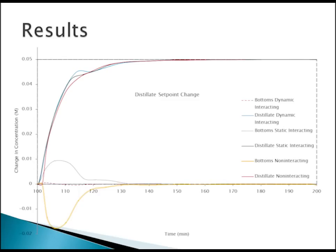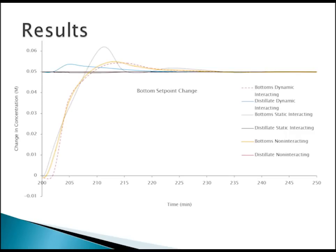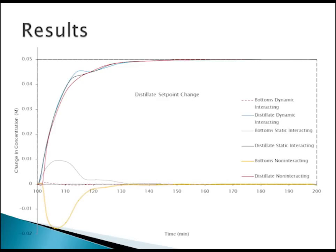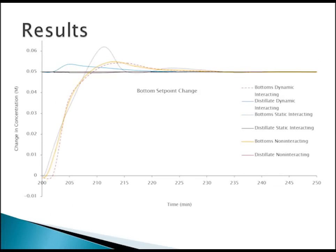Of course, you can't always get something for nothing. In this graph showing a bottom set point change, most of the bottom stream responses were about the same — no clear advantage there. And the dynamic interacting controller was actually the worst for the distillate stream. There is a give and take: better control in one stream means slightly worse in the other. However, the change in the distillate stream with the dynamic controller is still much smaller than what we see with the static or non-interacting controllers. So we would still recommend the dynamic interacting feedback system.